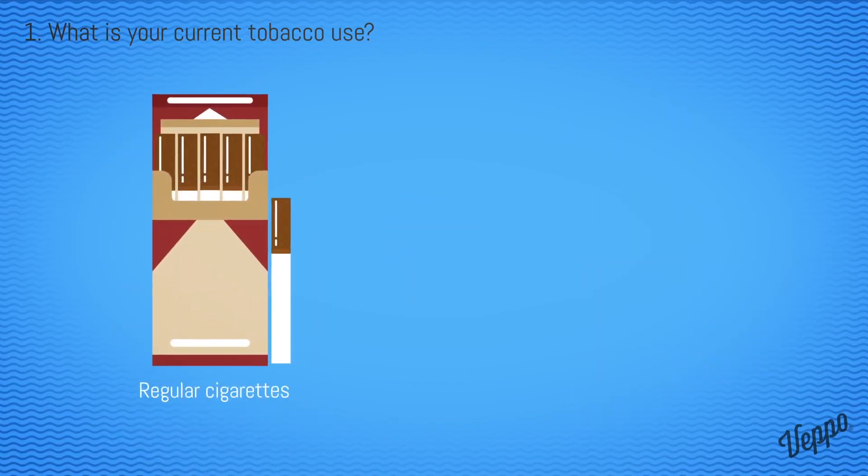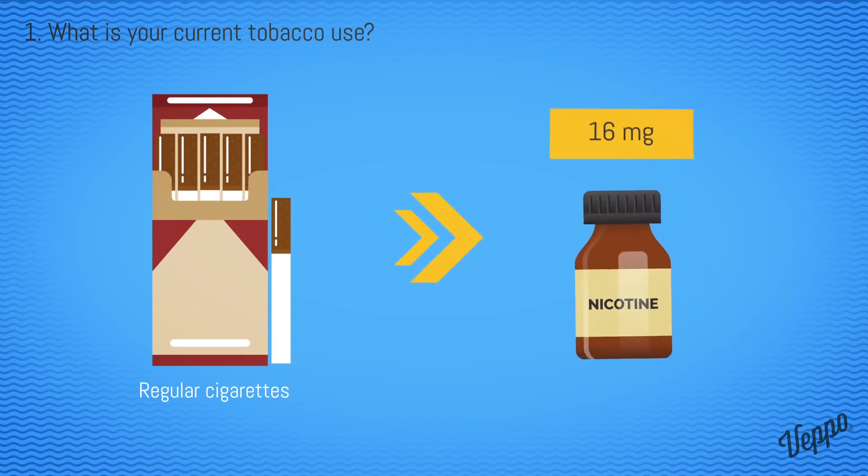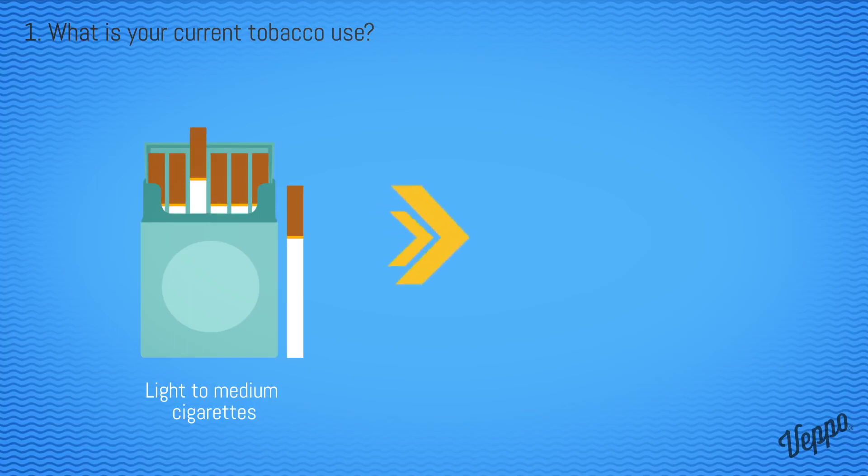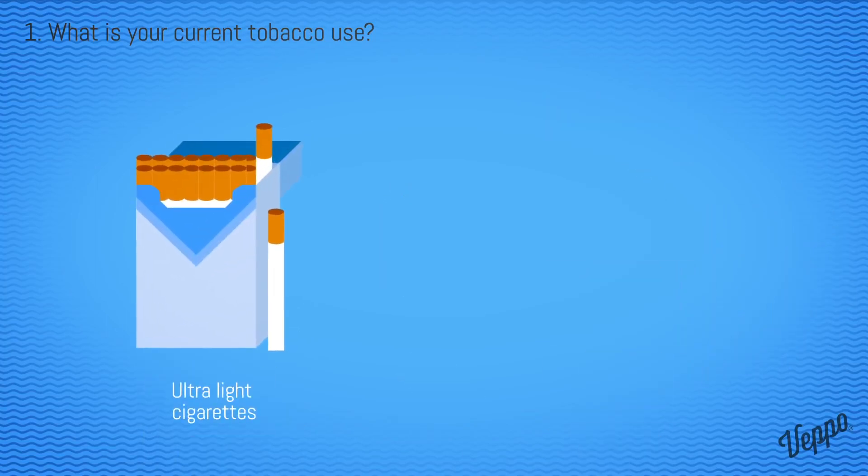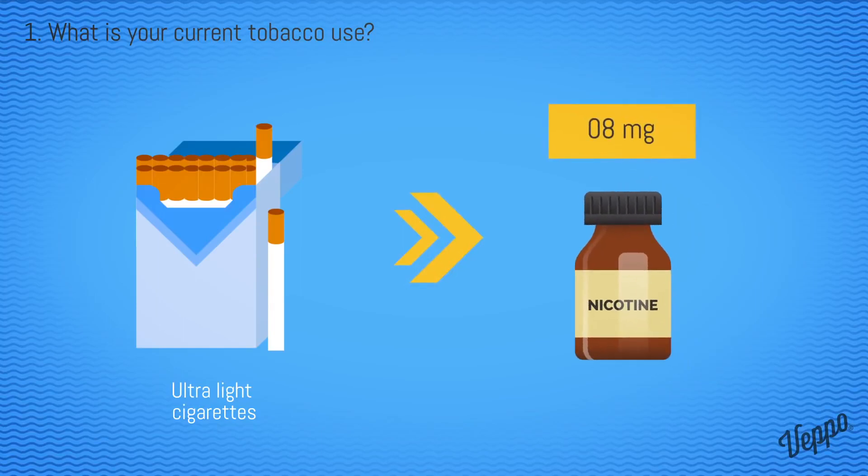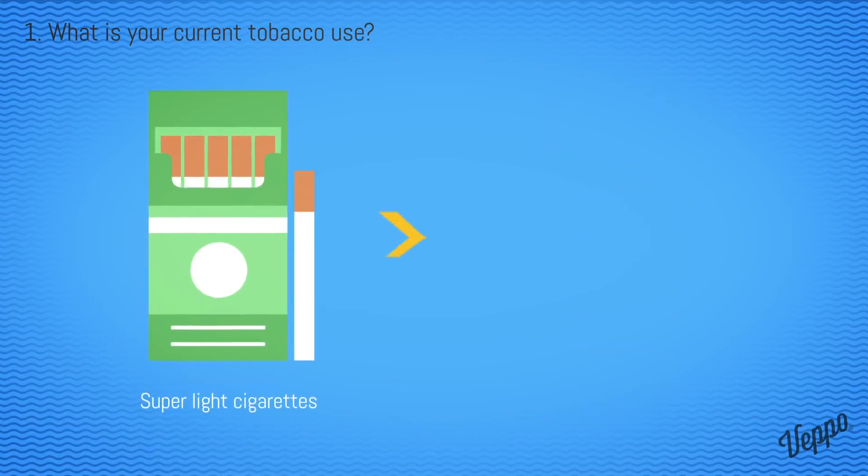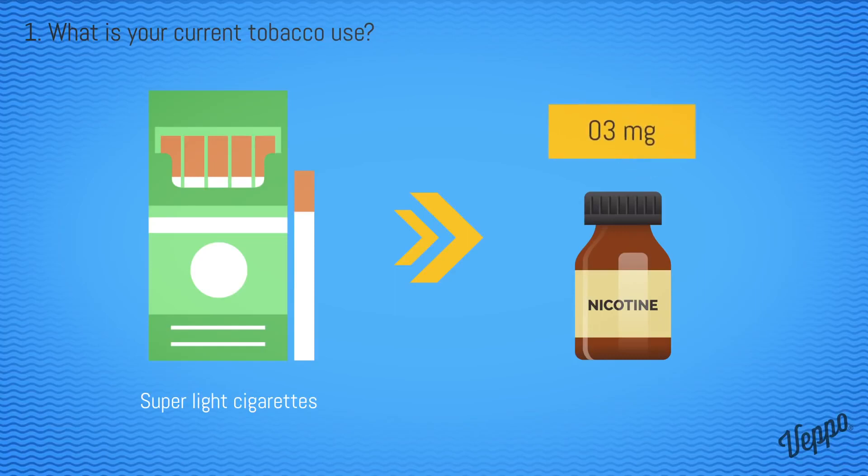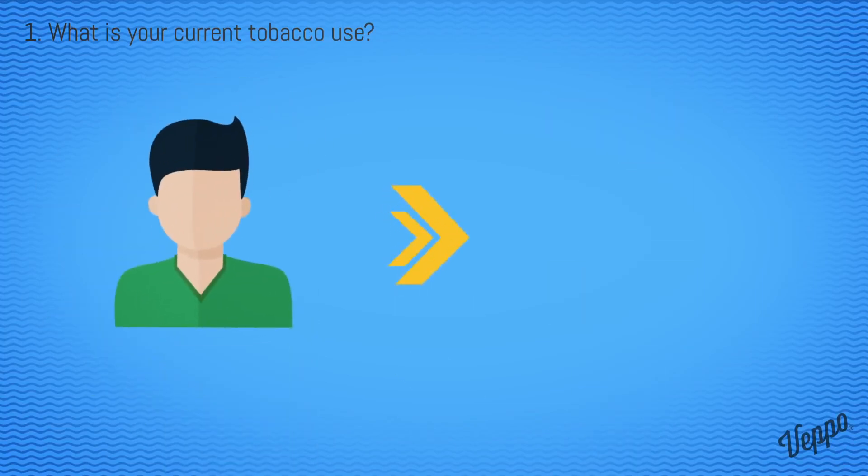Most people smoke regular cigarettes, which would call for 16 milligrams of nicotine. For those who smoke light to medium cigarettes, opt for 11 milligrams of nicotine. If you smoke ultralight cigarettes, you will need 8 milligrams of nicotine. Those who smoke super light cigarettes choose 3 milligrams of nicotine. Non-smokers don't need any nicotine in their e-liquid.